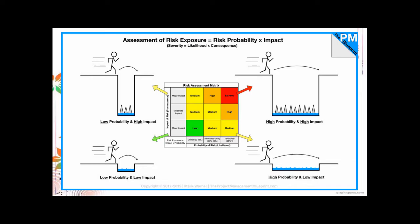Then there is high probability but low impact: the hazard is very likely to occur, but the consequences are not so dire — it's livable, survivable. That's still considered a medium risk. And then the high risk is, of course, high probability and high impact — the hazard or threat is highly likely to occur, and if it does, it is deadly.